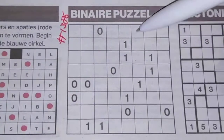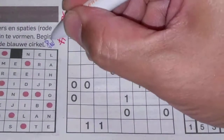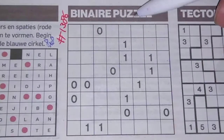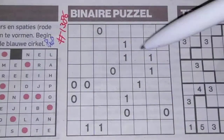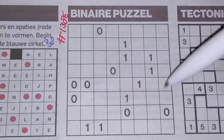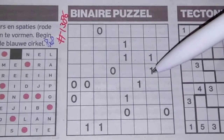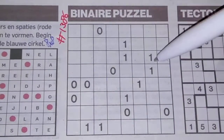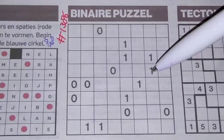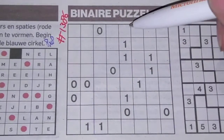It's an eight by eight binary puzzle. That means in a row or in a column there are always four zeros and four ones.